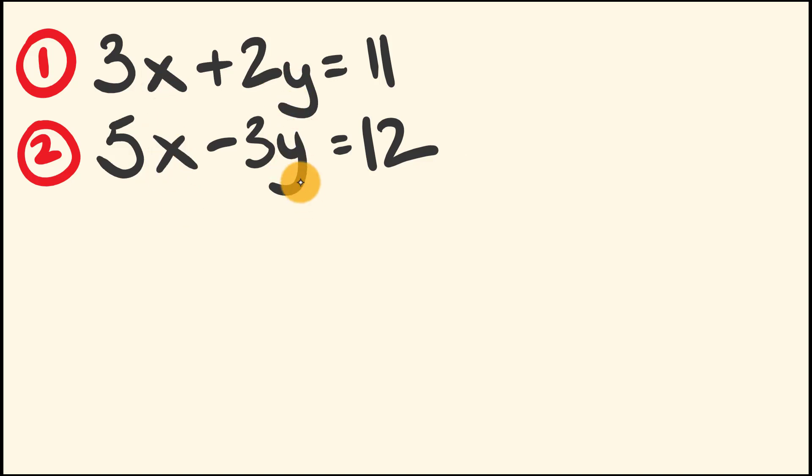Let's do this. The way we're going to do this is we're going to multiply each equation so that we get, for the same variable, the same coefficient. I'll show you what I mean by this. If you have a look for the variable x, we have a coefficient of 3 and 5, they do not match.